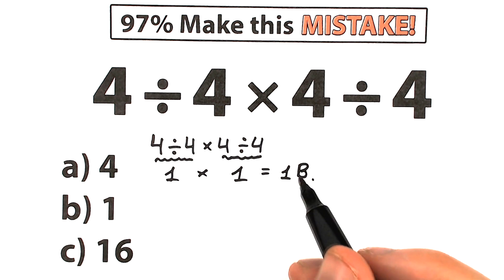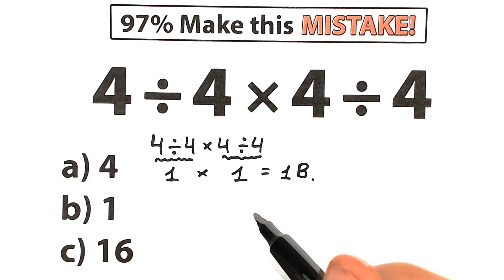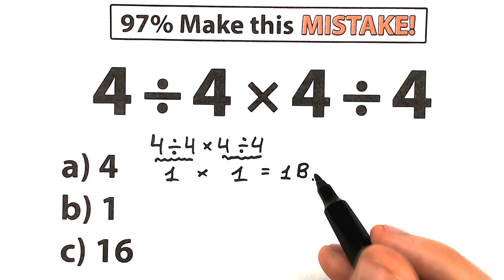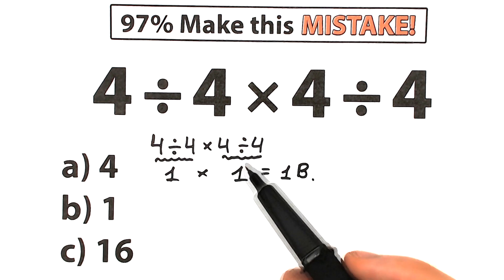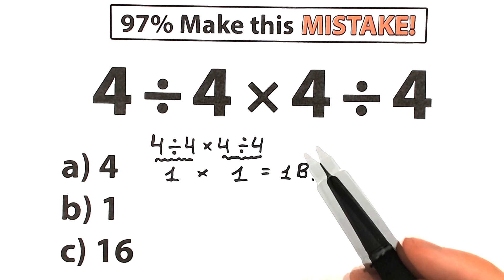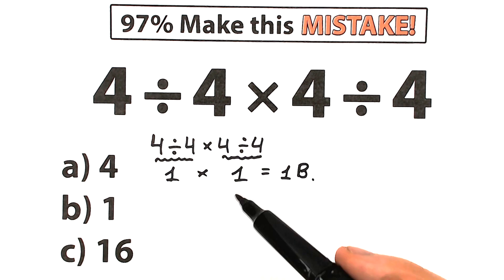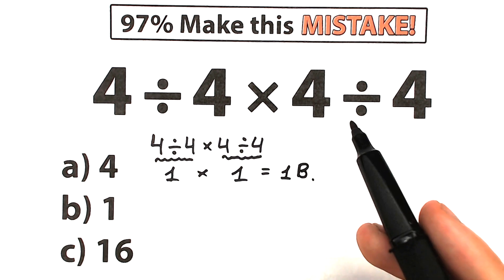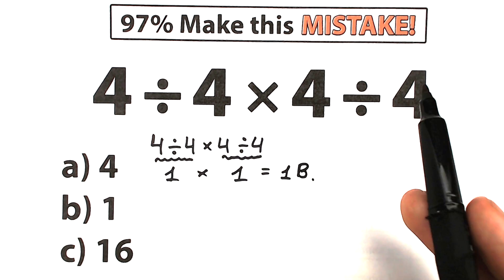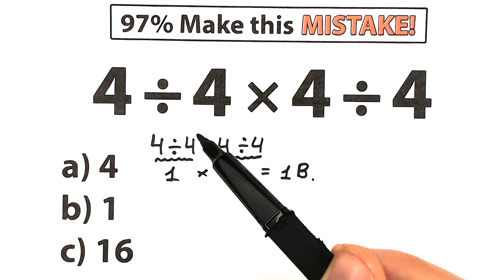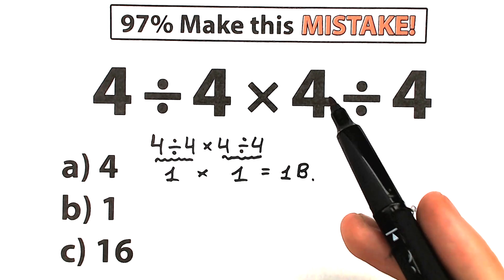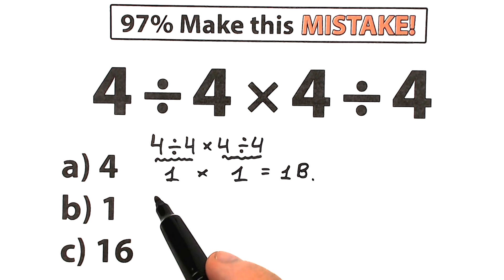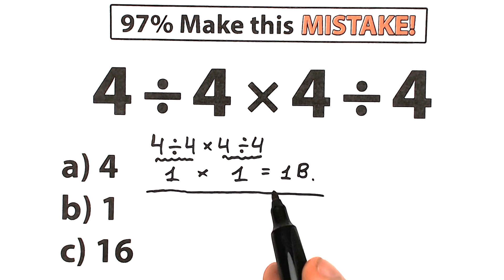But in math we can't solve a question randomly or chaotically. We need to know the correct order of operations, because whatever order we select is going to create a different answer. If we start from the multiplication in the middle we get one answer; if we start from division we get another. We need to find the one and only correct answer to this challenge.